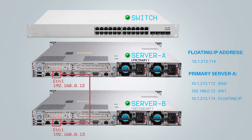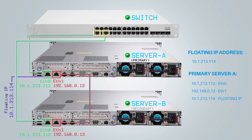In order to access the primary server, you would use the virtual — also known as floating — IP address. The floating IP address binds to the primary interface of the primary server. This means that while server A is in primary state, it will be accessible via three IP addresses: 10.1.213.112 on the primary network interface, 192.168.0.12 on the secondary network interface, and 10.1.213.114 as the floating IP address. The purpose of the floating IP address is that it always points to the primary server.